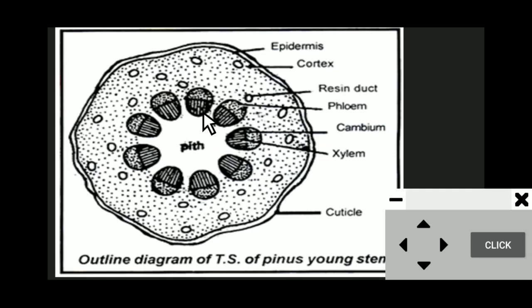Each vascular bundle is conjoint, collateral, and open. Conjoint means xylem and phloem are arranged together in the same radius. Collateral means xylem is arranged towards the pith while phloem is arranged away from the pith.